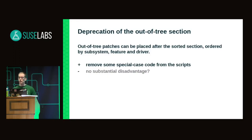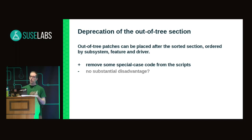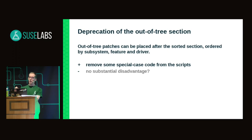One participant suggested removing the list of well-known repositories entirely and moving all patches after the sorted section into it. This would require care because some patches outside the sorted section have git-commit tags, and the scripts currently try to verify those commits against reference repositories, potentially encountering more errors. The out-of-tree section is going to stay for now, but putting all upstream-tagged patches inside the sorted section remains a good idea to consider.